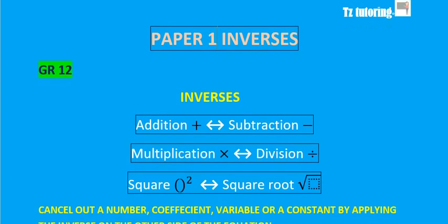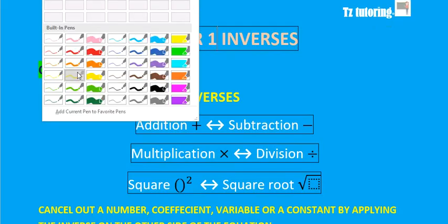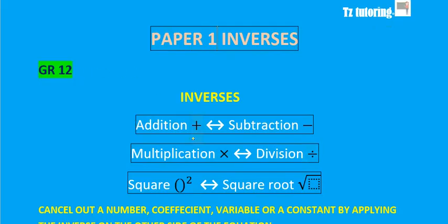An inverse is basically doing the opposite to cancel out a certain operation. The inverse of addition is subtraction. So if you want to cancel out a plus, you can minus on the other side.